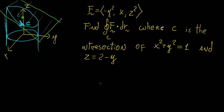What we're going to be doing in this video is we're going to look at a problem in which we have a curve C oriented along the plane z equals 2 minus y, and we're asked to find the line integral of that curve C with respect to the vector field (-y², x, z²). C is essentially the intersection between the cylinder x² + y² = 1 and the plane z = 2 minus y. Parametrizing this would be a little complicated using simple parametric curves since the curve is an ellipse varying with respect to z.